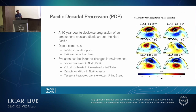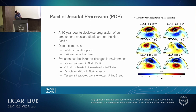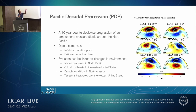Moving from the Kuroshio Extension and the North Pacific Ocean to the North Pacific atmosphere, people have seen a phenomenon called Pacific Decadal Precession — another term from my title. This Pacific Decadal Precession is a 10-year counter-clockwise progression of an atmospheric pressure dipole, which is a high-pressure pattern and a low-pressure pattern, as you see in the picture. This clearly shows a north-south dipole pattern at one phase and an east-west teleconnection phase at another.